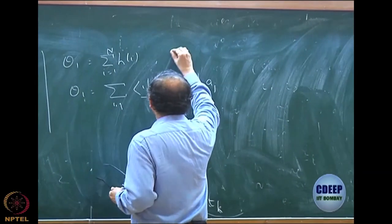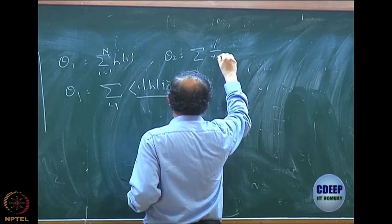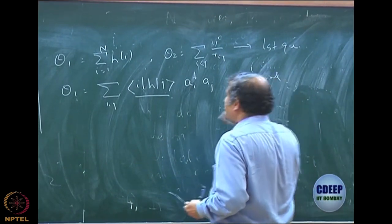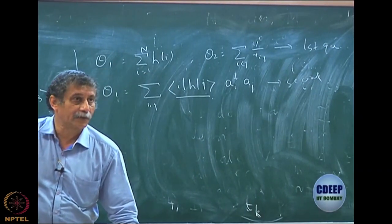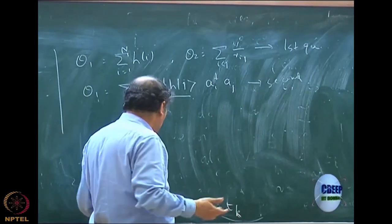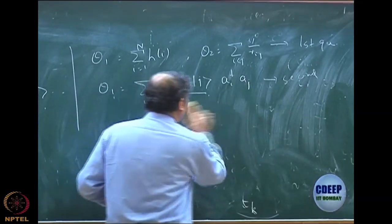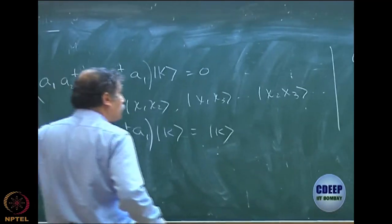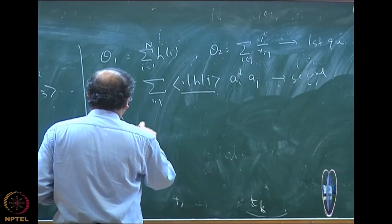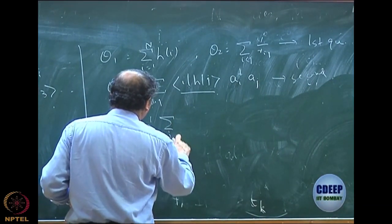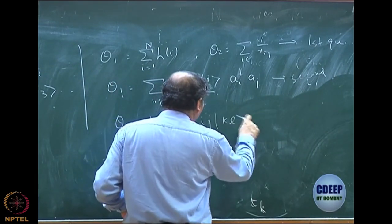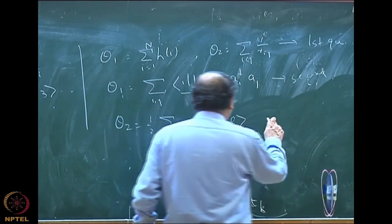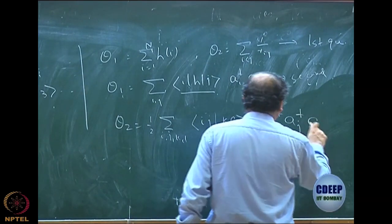In the same way, theta2 is sum over 1/r_ij — it is a two-electron operator in first quantization. Note that in this case i and j are now spin orbitals, not coordinates of the electrons — quite obviously, because I am using ai dagger, aj, etc. They are no longer coordinates; they are actually the spin orbital basis. That is the beauty of second quantization: the number of electrons vanishes. Theta2 then becomes one-half of the sum over ij kl of the integral ij|kl times operators which create ij and annihilate kl.